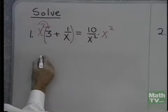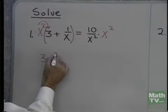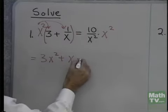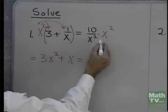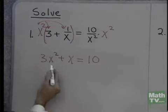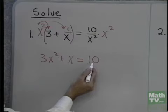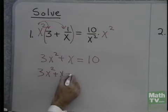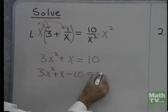x squared times 3 will be 3x squared. x squared times 1 over x will be x. And then 10 over x squared times x squared will be 10. So I end up with 3x squared plus x is equal to 10. I'll put this in standard form: 3x squared plus x minus 10 is equal to 0.